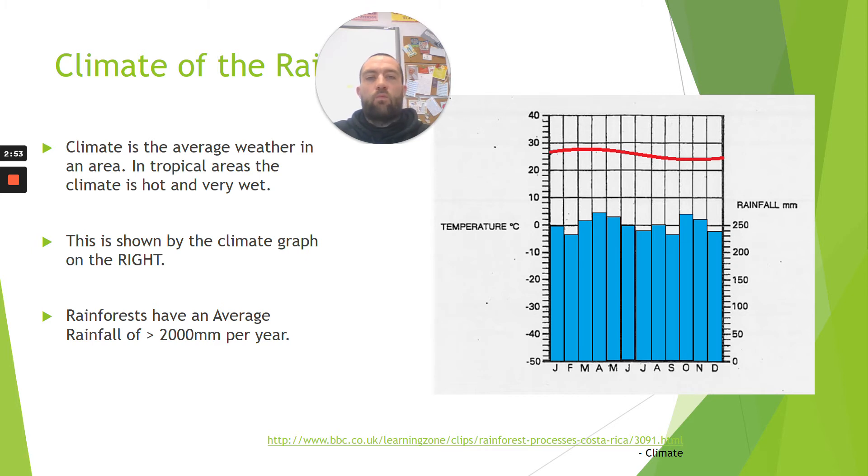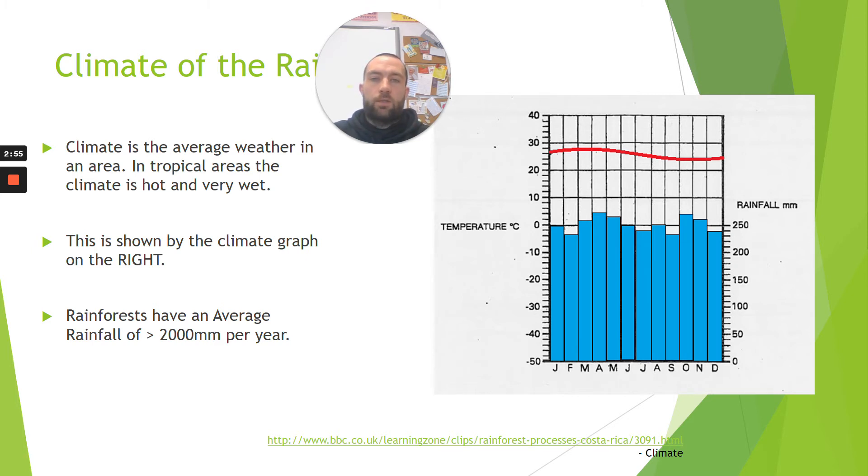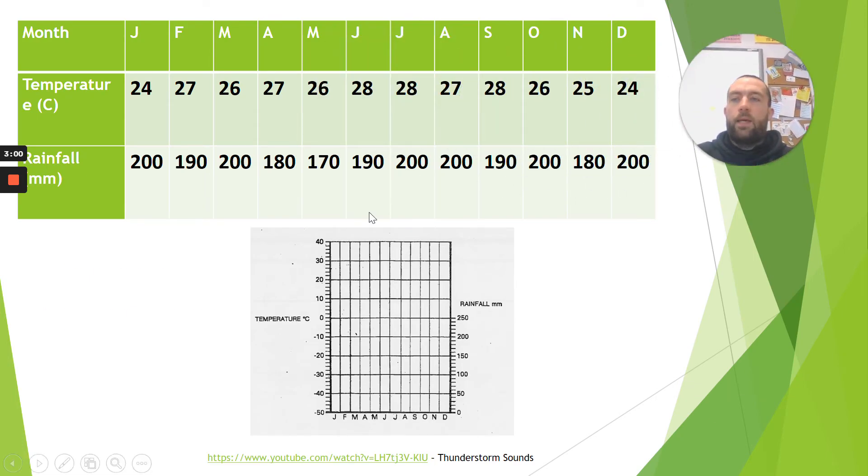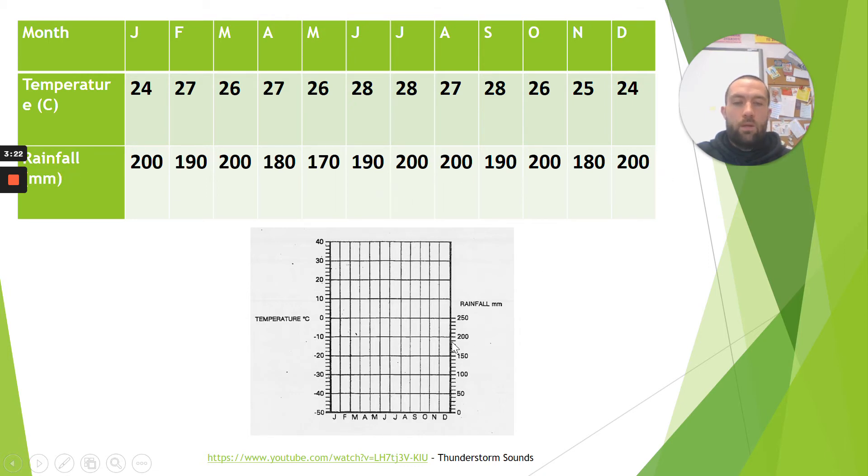All right, so we have a climate graph for the rainforest. So what I want you to do on your OneNote is take the data from this table for January, February, March, April, May and so on for the entire year. And what I want you to do is mark on the temperature as dots using the scale on the left hand side, and draw the bars for rainfall using the scale on the right hand side. All right, so I would like you to do that now.